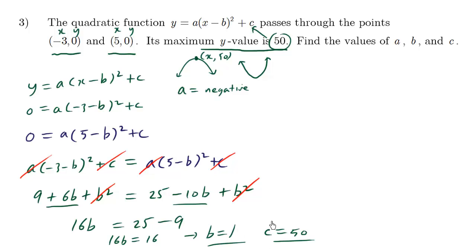Now that we have b and c, we can plug into any equation to solve for a. So we'll just use this equation over here. We have 0 equals a times negative 3 minus negative b. b happens to be 1, squared plus c, which happens to be 50.